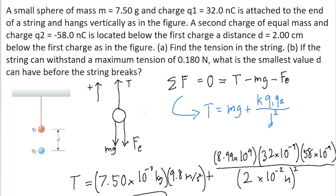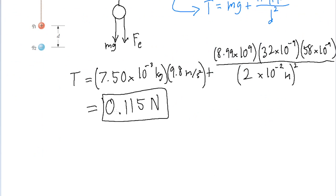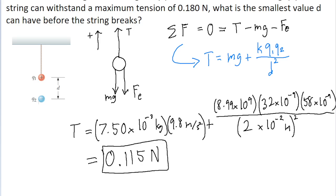Part B of the problem changes the situation a little bit. Now we're assuming that the string can only withstand a maximum tension up to a magnitude of 0.18 newtons. We're asked to find what the smallest value of d can be before the string will break. This problem is based on the fact of Coulomb's law that the closer two charged particles are together, the stronger the electrostatic force is. So if we move q sub 2 further upwards, closer to q sub 1, the force between the two particles would become stronger and stronger as that distance closes.